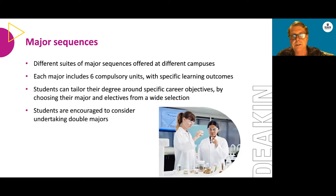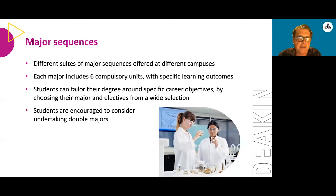For instance, a lot of students doing the human biology major will also do a major in cell biology and genomics. The combination gives you a strong basis for employment within pathology labs and similar work environments — a good example of where a double major is advantageous in terms of gaining employment.